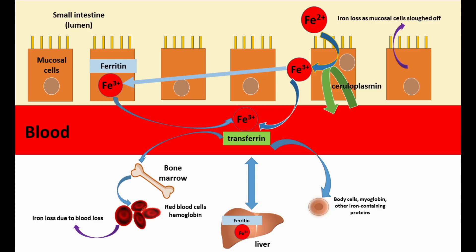The iron that is not picked up from mucosal cells is excreted in the feces along with mucosal cells when they die and are sloughed off into the intestinal lumen. The iron absorbed over immediate needs can be stored in the protein ferritin, primarily in the liver, spleen, and bone marrow. When ferritin concentrations in the liver become high, some is converted to an insoluble storage protein called hemosiderin. The bound iron can be mobilized from body stores as needed.